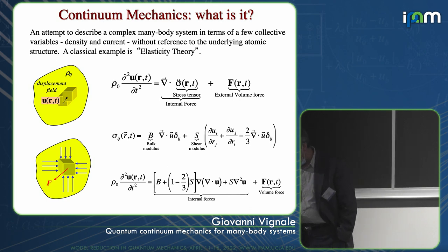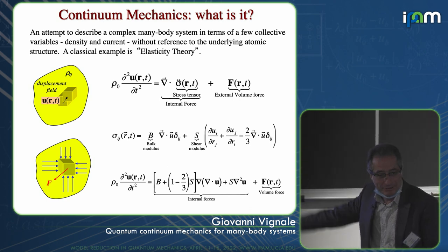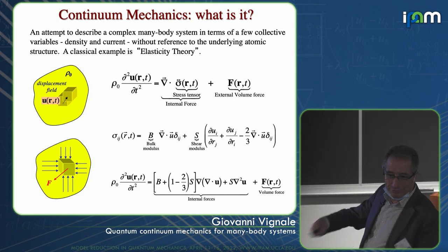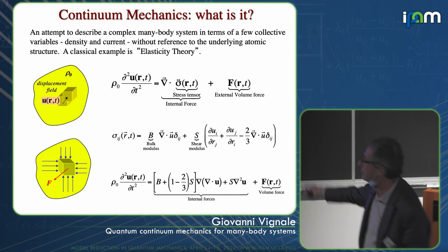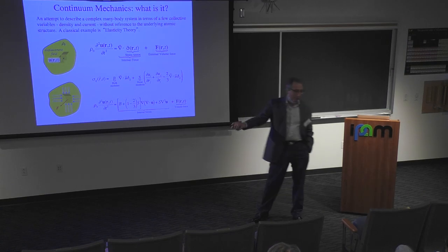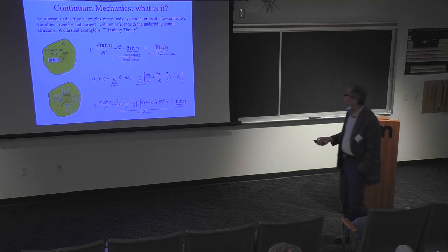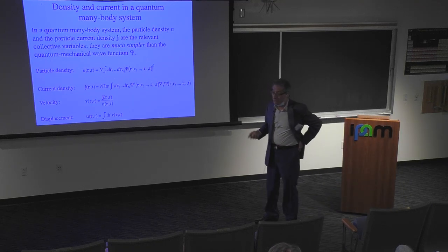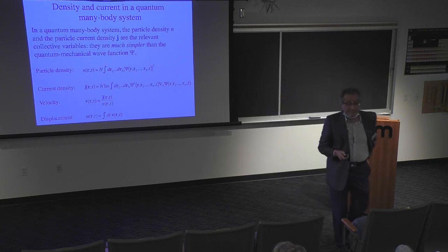The reduction couldn't be more dramatic — you have gone from 10 to the power 23 degrees of freedom of the atoms to just a single field U of R and T, a much simpler object. Now I would like to discuss whether we can do something similar for quantum many-body systems.